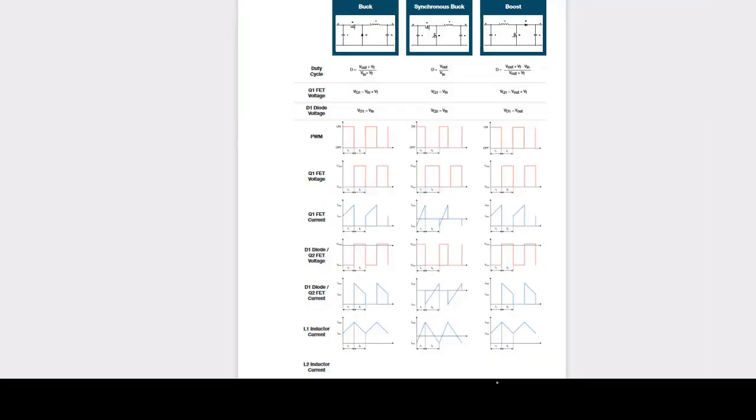In the previous videos, it was possible to derive an expression for the output voltage of the buck converter using some simple arguments based on Fourier analysis.